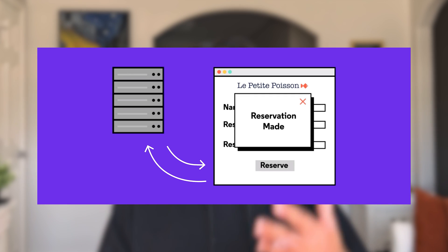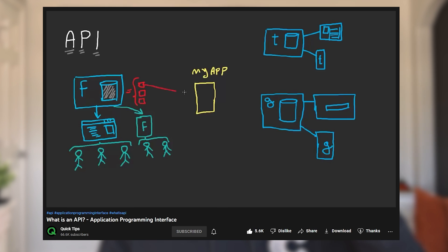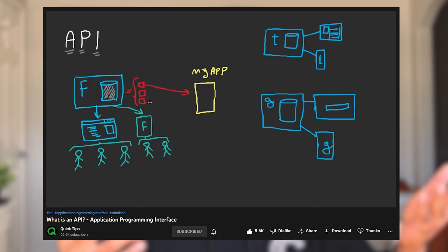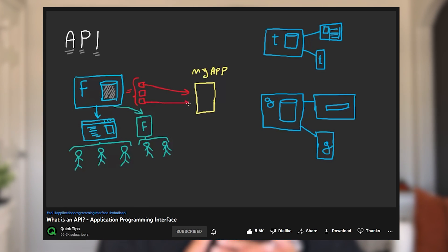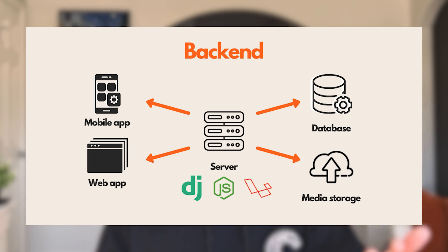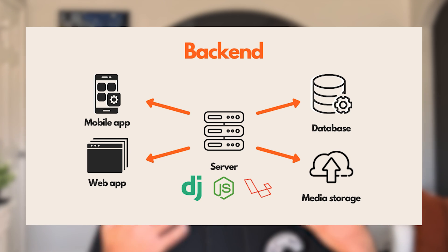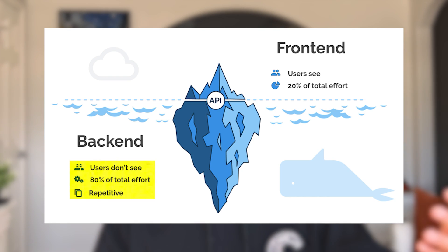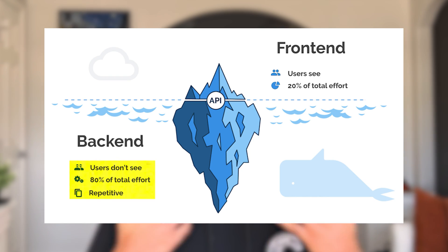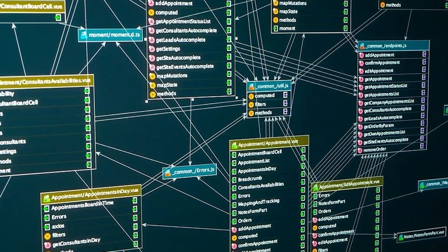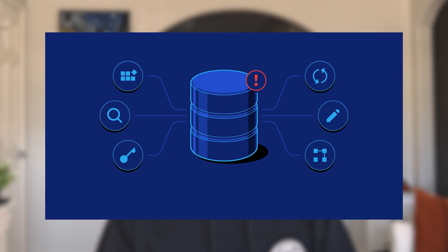In plain terms, the front end is what you as a user sees. The API layer is how the front end and the backend communicate with each other. The backend is what processes and computes everything we show on the front end. And the database is where we store any information we need to make the application work. It might be easier to understand all of this with an example.